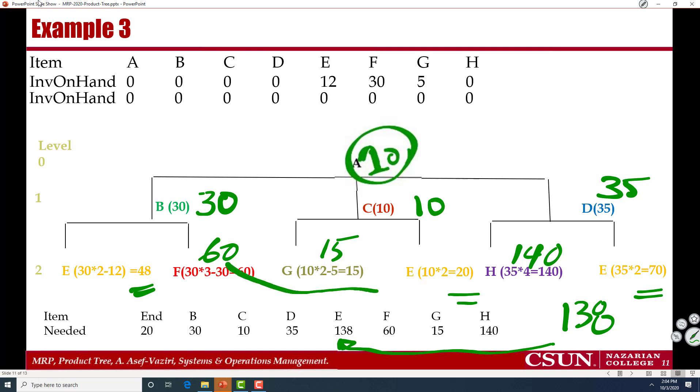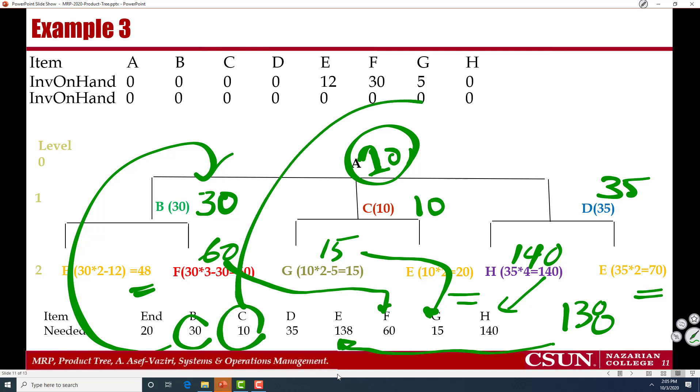138, 60, 15, 140. B is 30. We have found it here. C is 10. We have found it here. And D is 35. We have found it here. It seems we are fine.